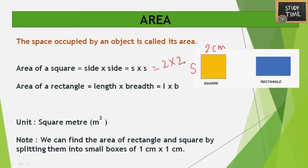The area of a rectangle is length into breadth. Here this is the length and this is the breadth, so we multiply length into breadth. For example, if the length is 2 meters and breadth is 3 meters, then the area is 2 into 3.